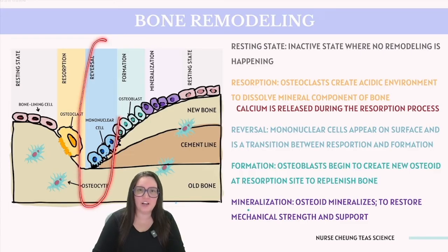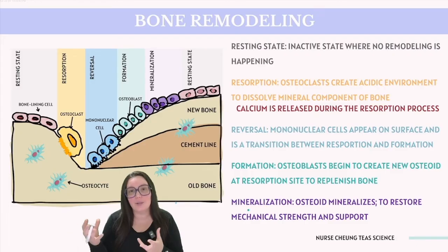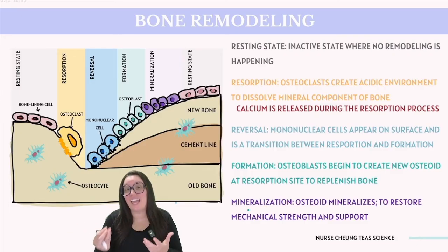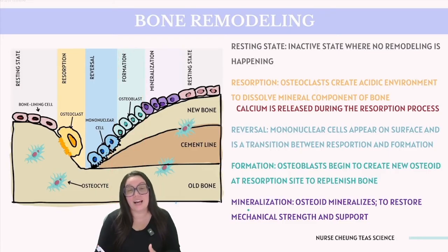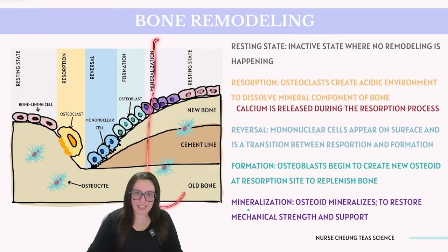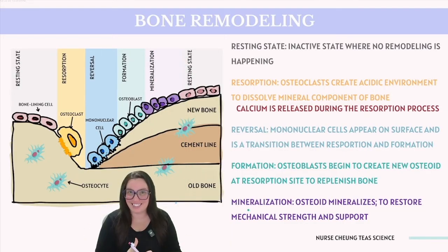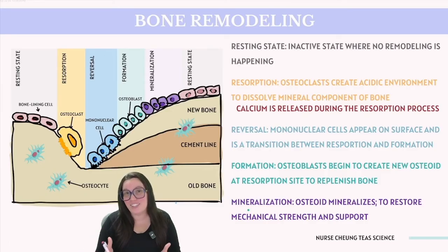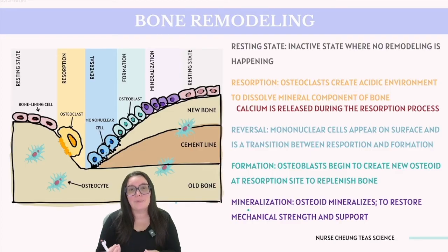After resorption, we have a brief period of reversal, where mononuclear cells appear on the bone surface. These cells signal the end of that resorption phase and the start of the formation phase. In the formation phase, osteoblasts begin to lay down new osteoid at the resorption site — osteoid being unmineralized bone matrix. Osteoblasts replenish the bone that was lost during the resorption phase, maintaining skeletal strength and integrity. In mineralization, the newly formed osteoid begins to mineralize as calcium and phosphate from the body fluids crystallize onto the collagen fibers of the osteoid, hardening the new bone to restore its mechanical strength and ability to support and protect the body.